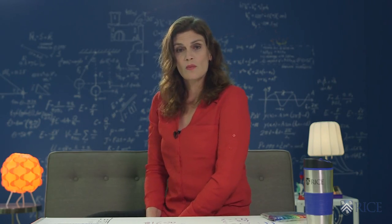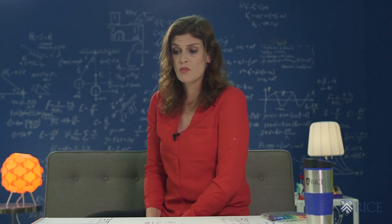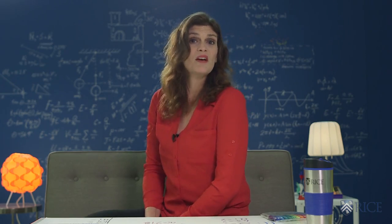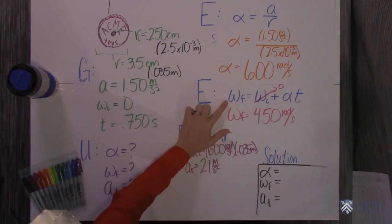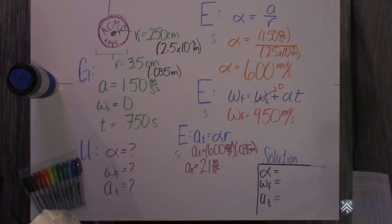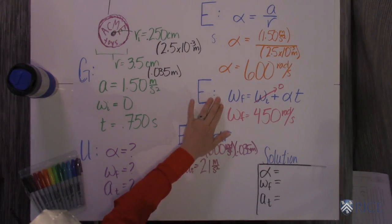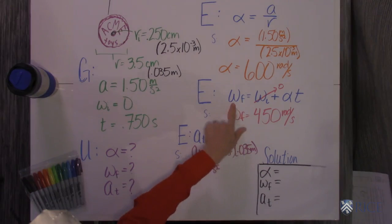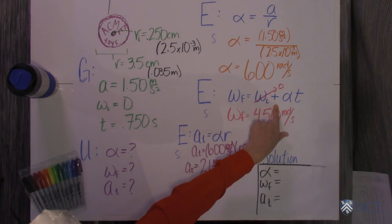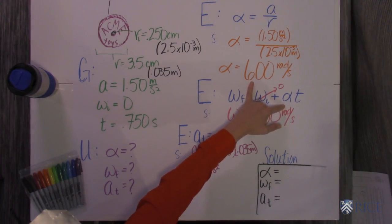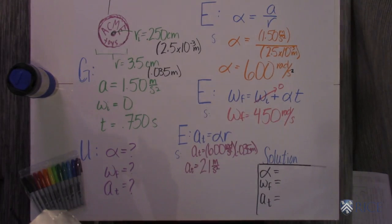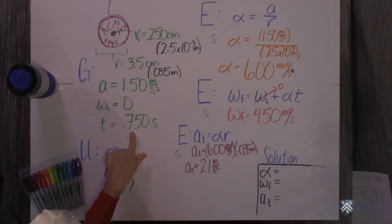The second part asks what its angular velocity is after 7.5 seconds. So these formulas look kind of new because the variables are different, but if you remember, these are just your kinematics equations with angular variables put in them. So you get that the final is equal to the initial plus alpha t, and since we have zero initial, we get to cancel, which is my favorite, multiply this angular acceleration by the time that it gives you, which is 0.75 seconds, and you get that your final angular velocity is 450 radians per second.